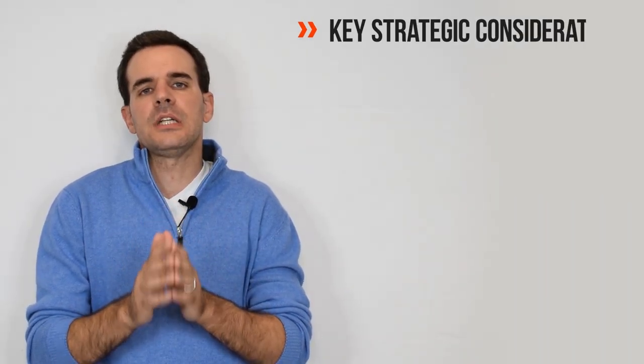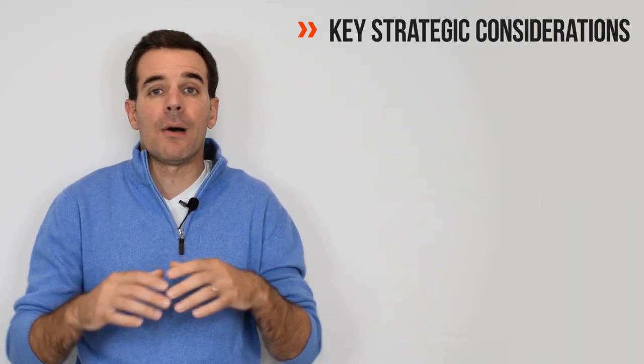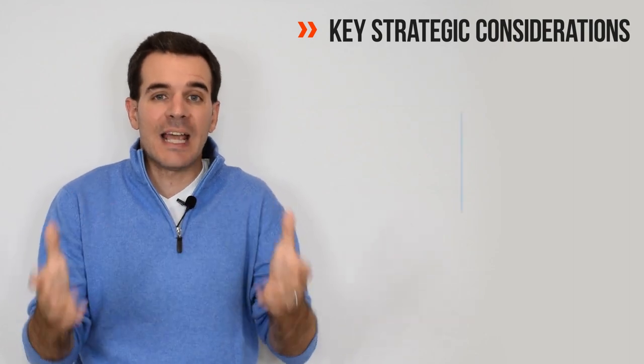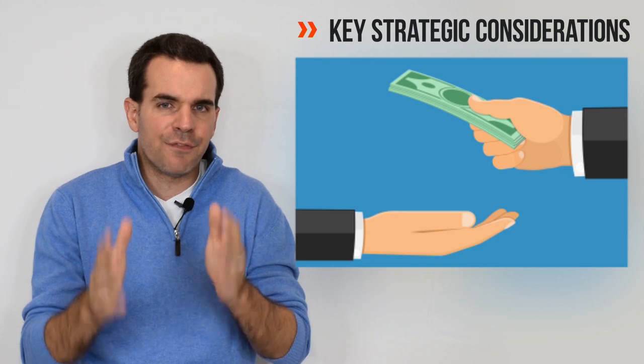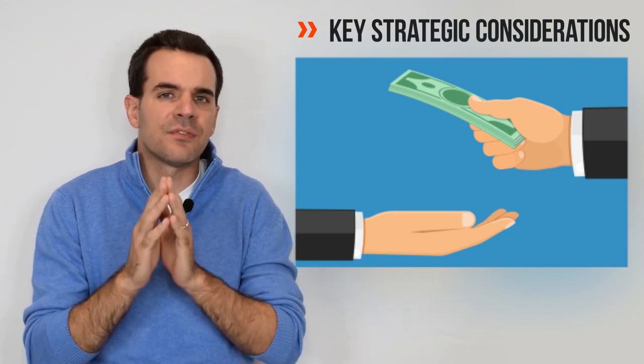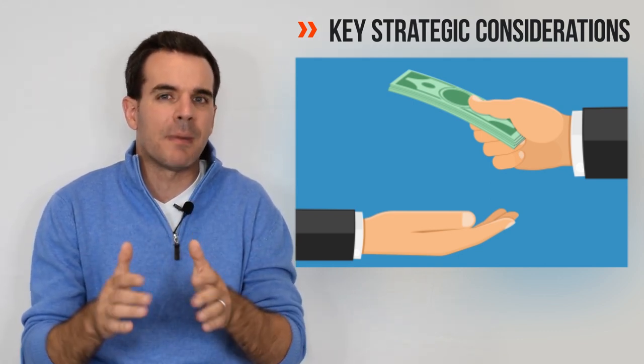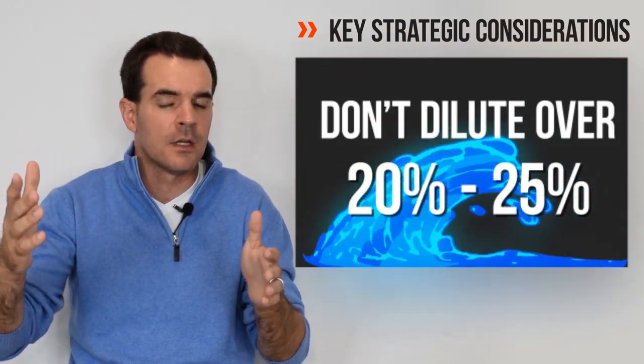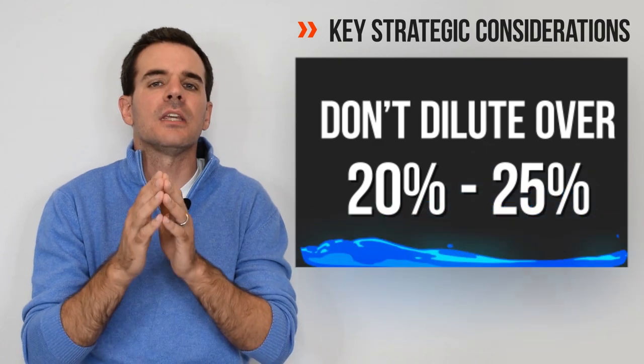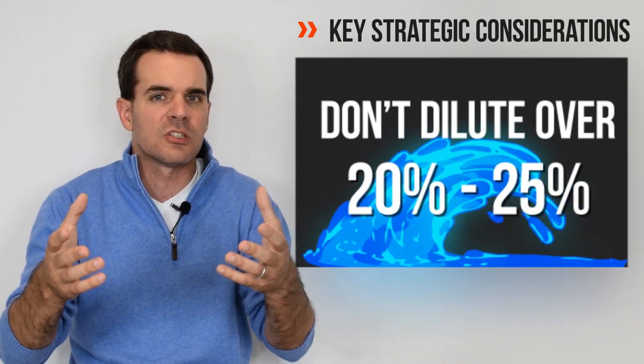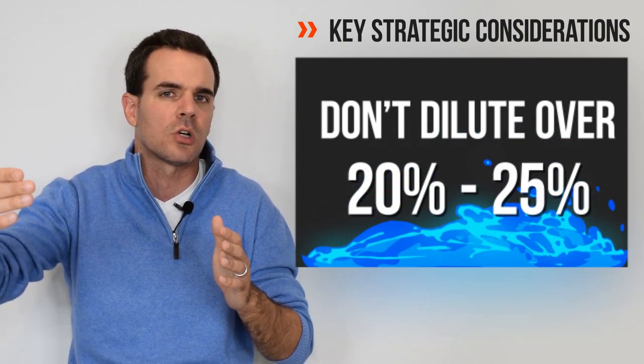Then you have the key strategic considerations. Obviously, on the first hand, it's going to be all about dilution. How much equity are you going to be giving away? The rule of thumb in every financing round is that you are not diluting the equity ownership by more than 20% or 25%. You want to always keep it under those figures so that you are not over-diluting yourself, and you can continue to mature the business.